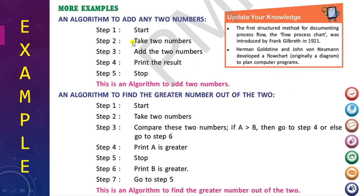Here's an example of an algorithm to add two numbers. The way to write an algorithm is stepwise. Step one will be start, step two will take two numbers, step three we will add the numbers, step four will print the results, and the final step will be stop.